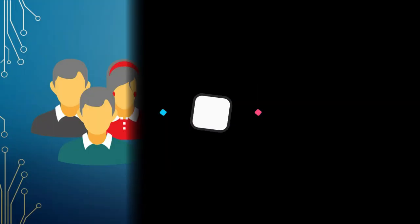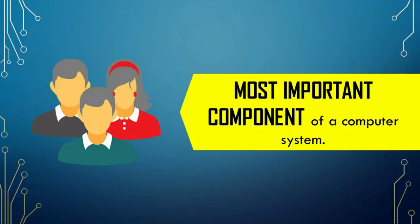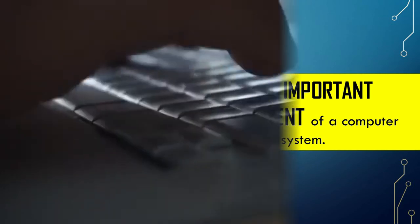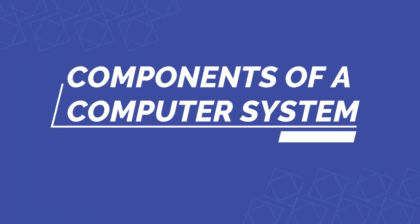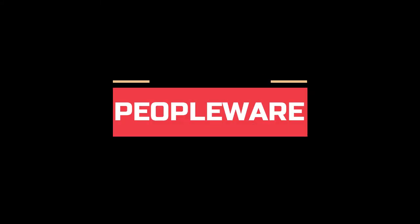The last component of a computer system is peopleware. Peopleware — the person using the computer — is the most important component of a computer system. The computer will not work if there is no person to use it, and it would be useless if no person interacts with it. That is why peopleware is the most important component. These are the components of a computer system: hardware, software, and peopleware. All of them work together so that we can use our computers effectively and efficiently.